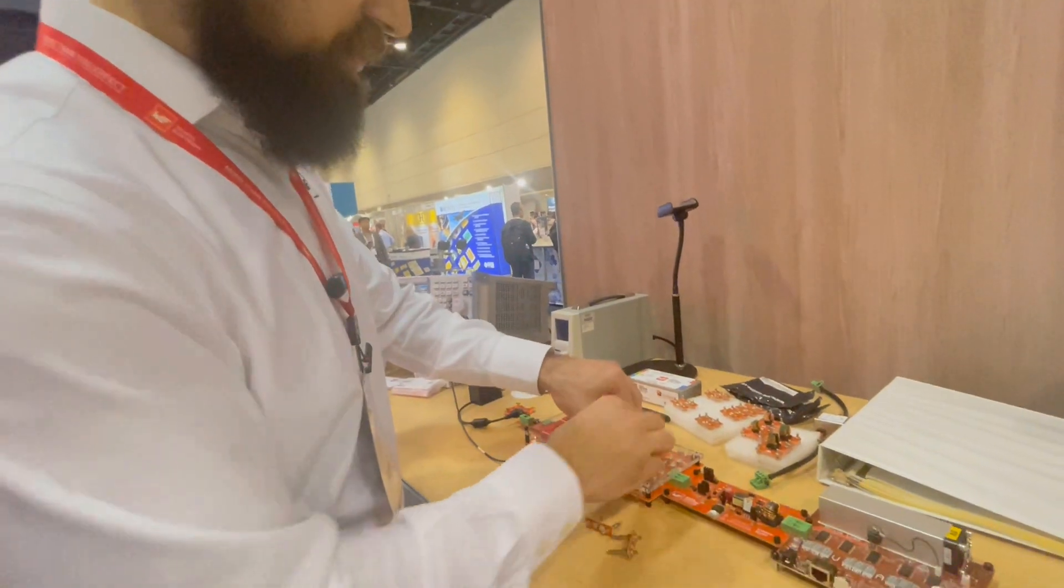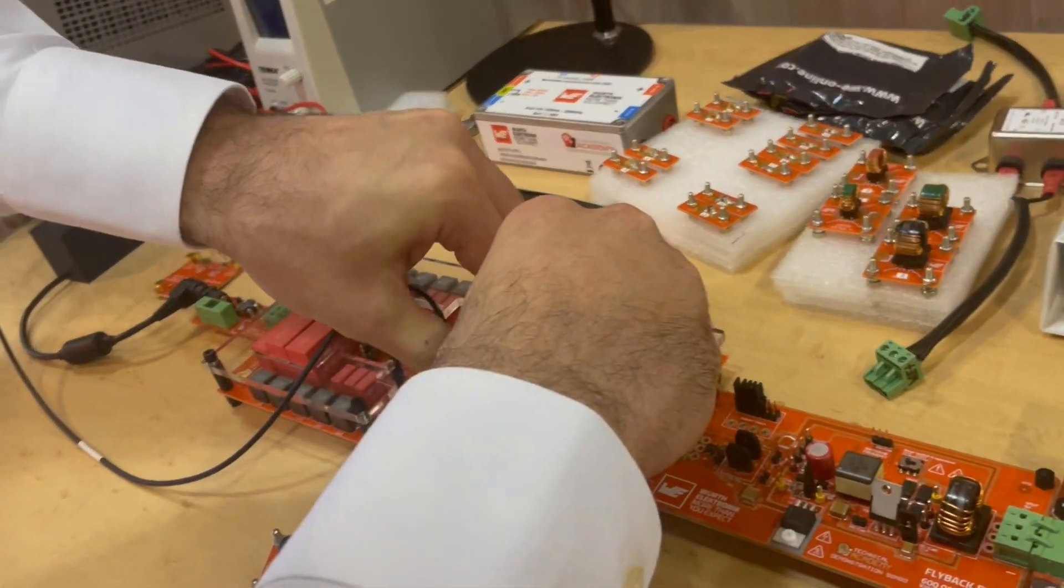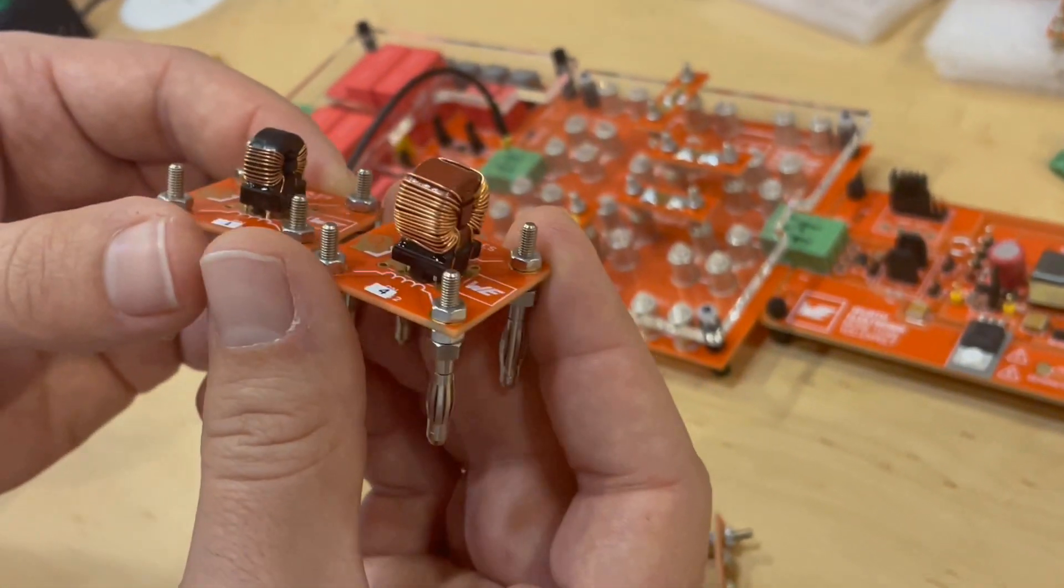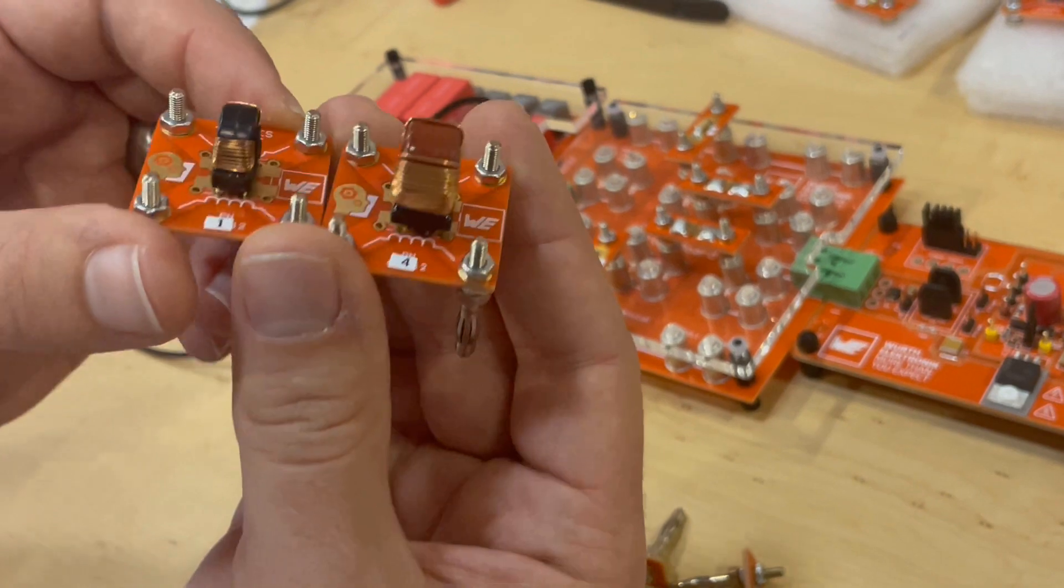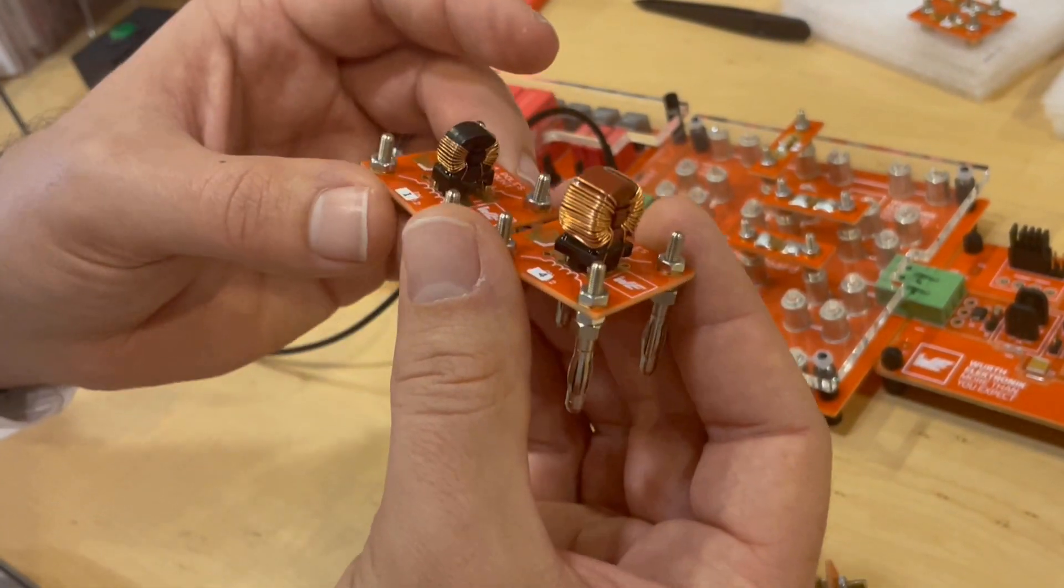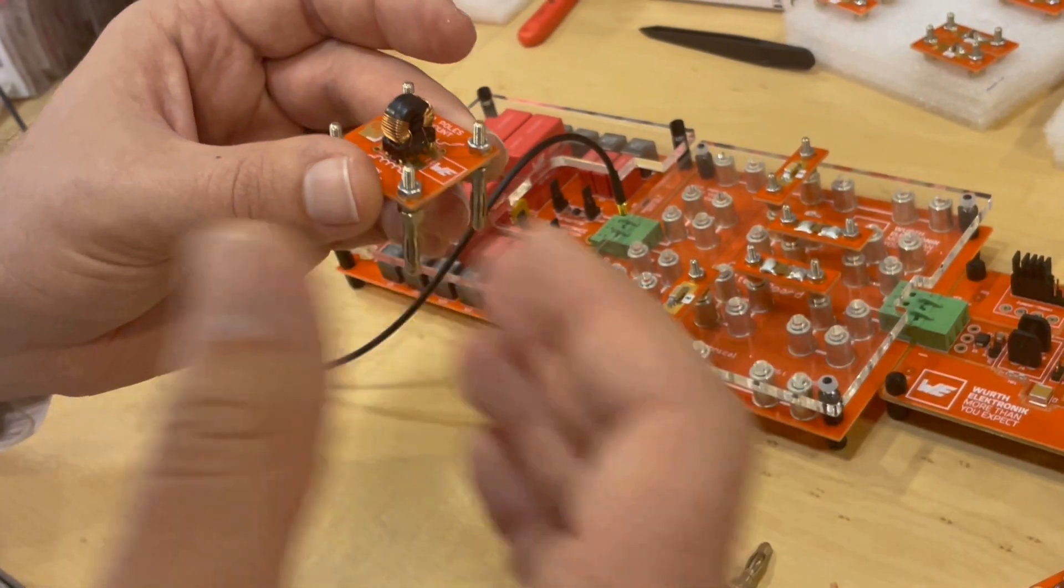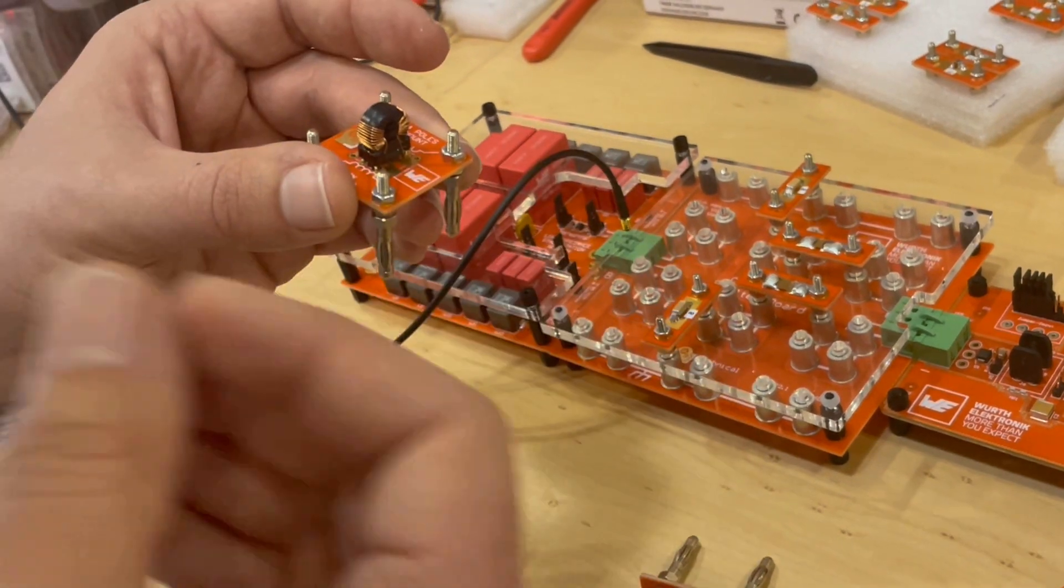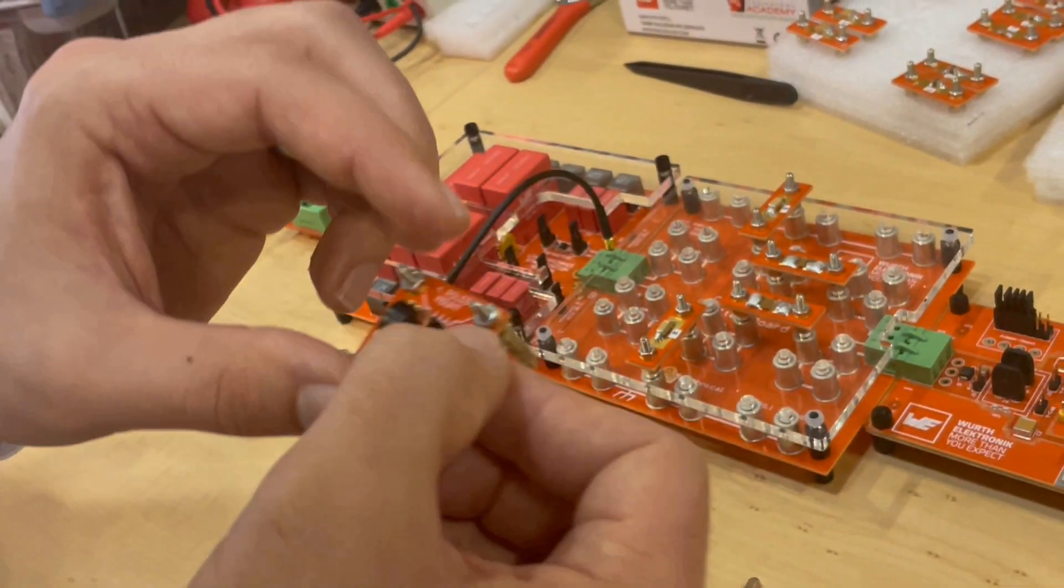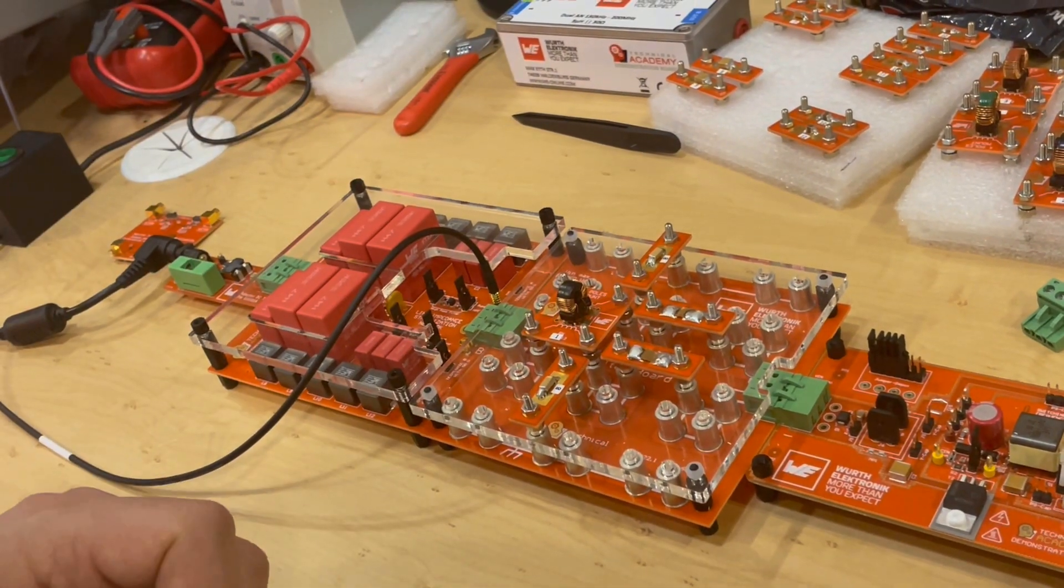But one question that I have is can we do a filter design using a much smaller common mode choke? If we look at these side by side they have similar electrical performance but the nanocrystalline choke with the black is very small. So if you have a design that's very power dense, size or weight is a concern, this might be a good option for you. So let's put this in the circuit and see what happens with the noise.